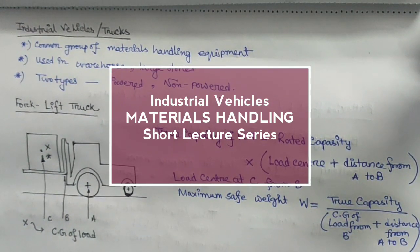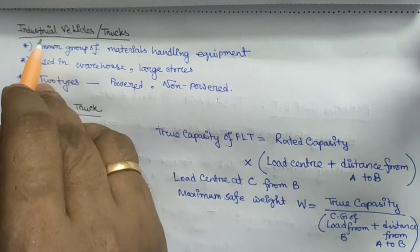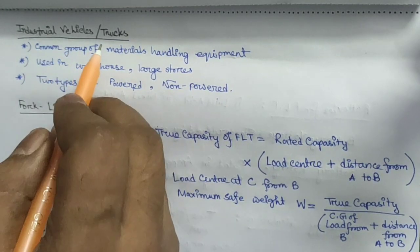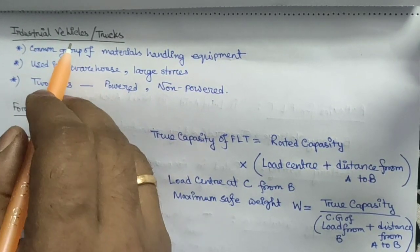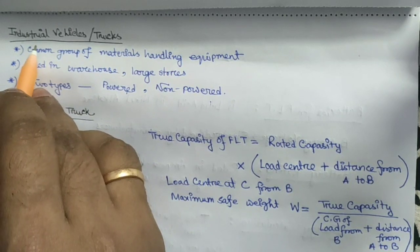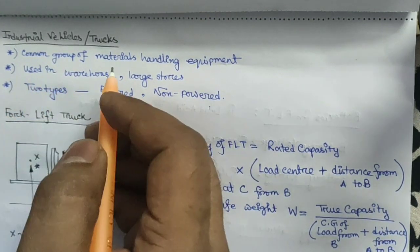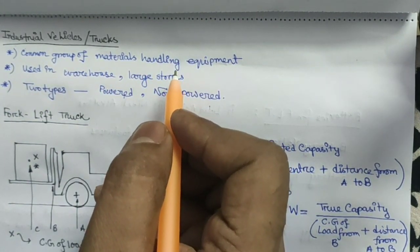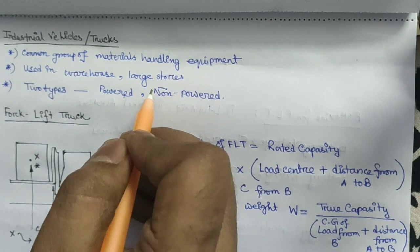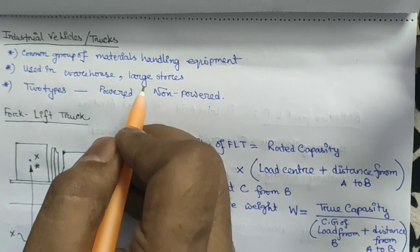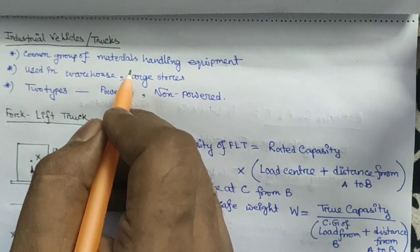Hello everyone, welcome to my channel. Today we are going to discuss material handling systems, specifically industrial vehicles or trucks. This term consists of two words: industrial and vehicle. Vehicles or trucks which are specifically used in industry are known as industrial vehicles or trucks. This is one of the most common groups of material handling equipment used in industry, as well as day-to-day distribution in warehouses, large stores, or transport depots.